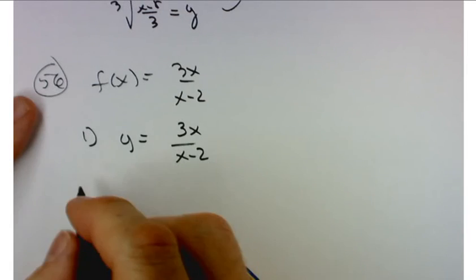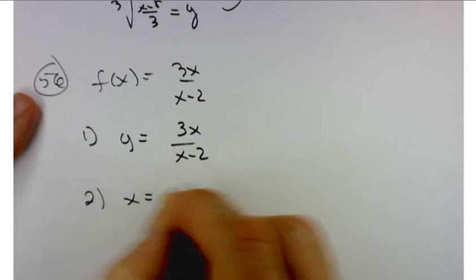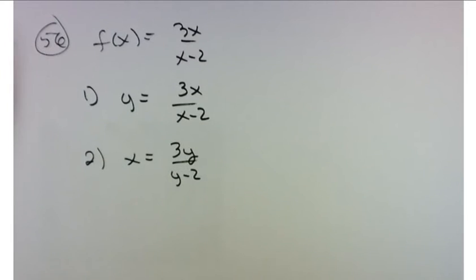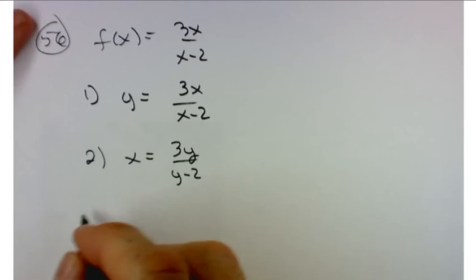F of x is 3x over x minus 2. This one's got a little bit of a trick in it. So I'm happy to solve this one for you, at least this one in class. If we interchange x and y, I get x equals 3y over y minus 2.